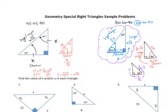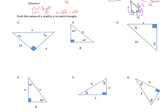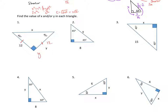Let's look at our first example — a 45-45-90 triangle. We're given 12 and asked to solve for x and y. Since it's isosceles and a right triangle, y is also 12. Going across the 45, we multiply by root 2, so x equals 12 times the square root of 2.